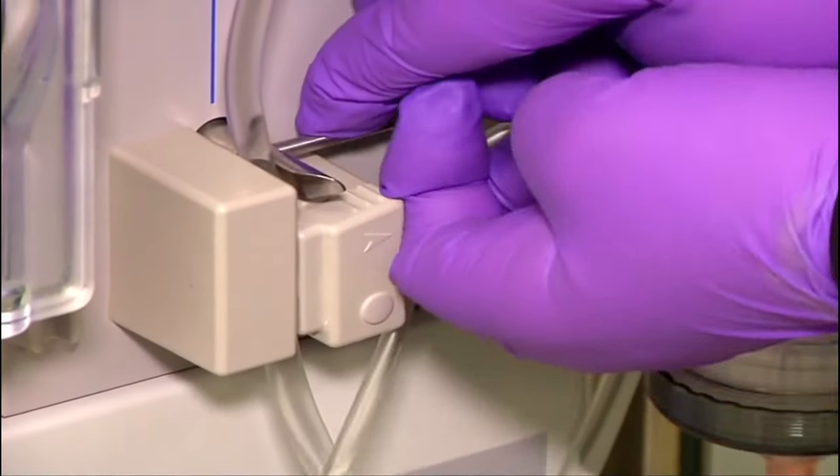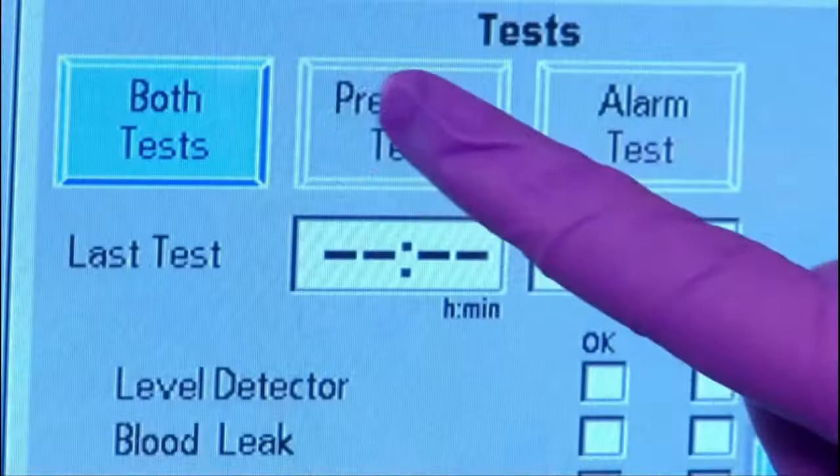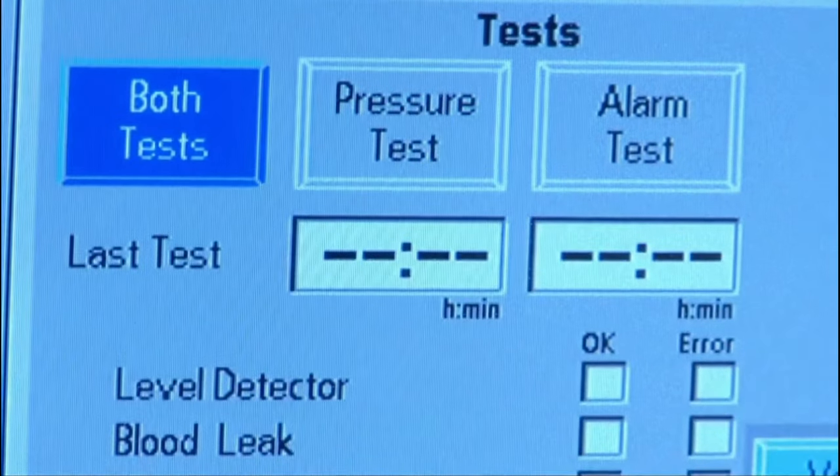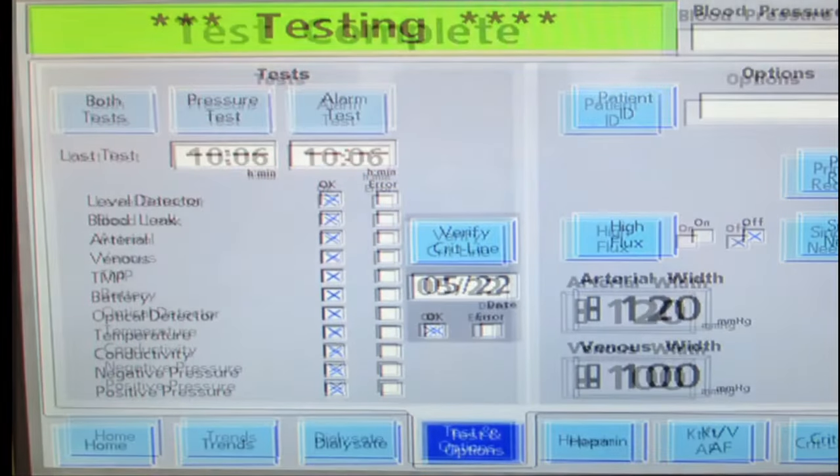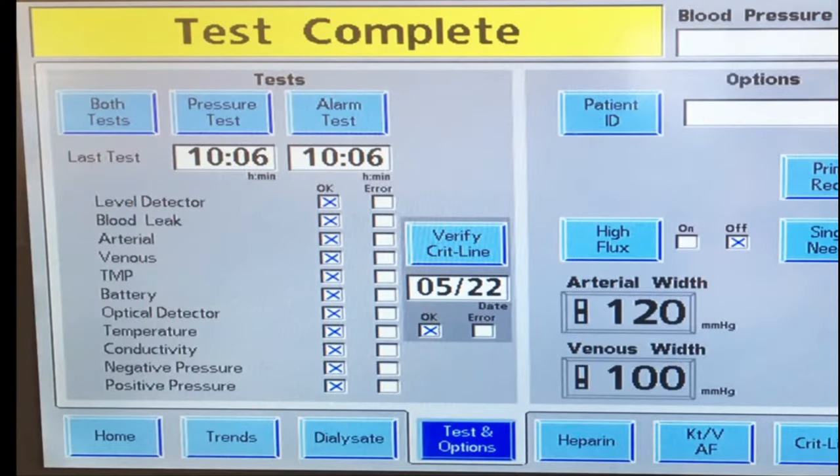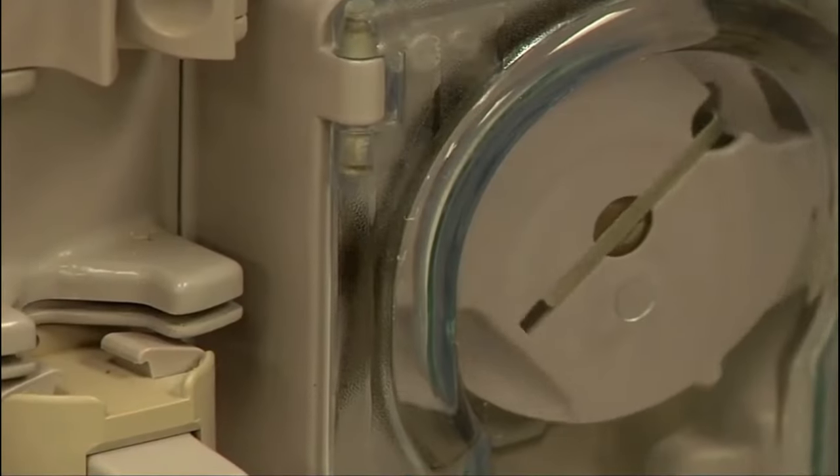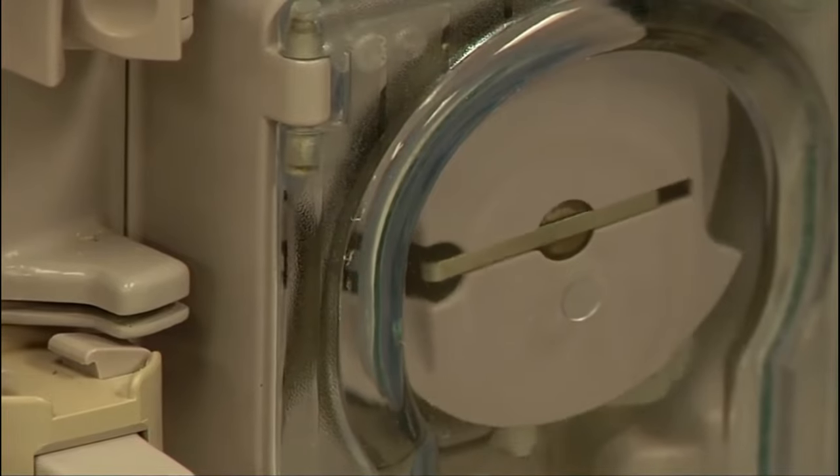Earlier dialysate delivery systems used pressure-controlled filtration, requiring dialysis personnel to calculate the TMP, enter the TMP into the machine, closely monitor the filtration rate, and recalculate and adjust the TMP as needed.